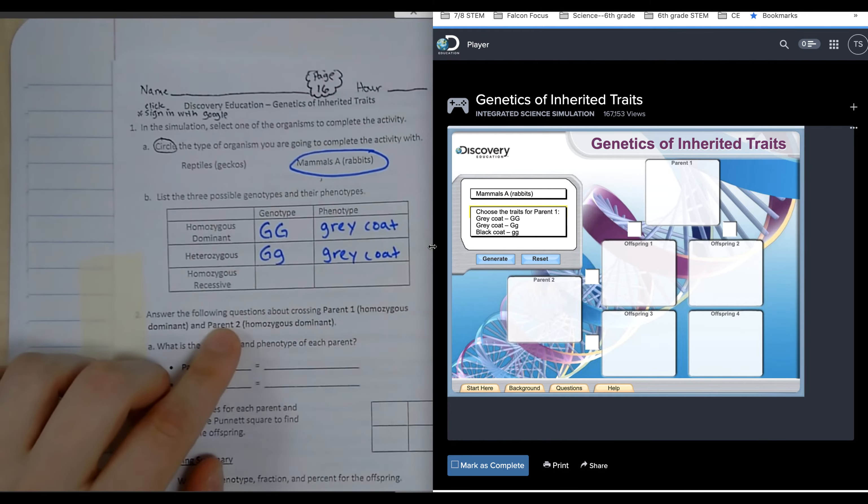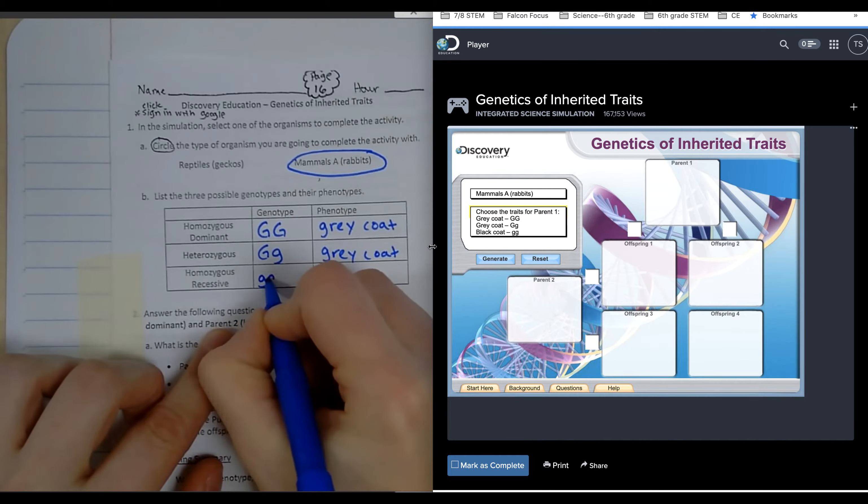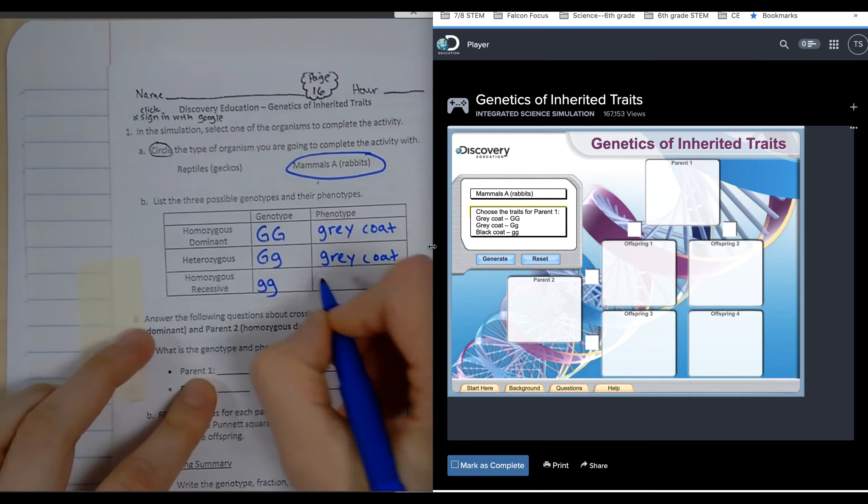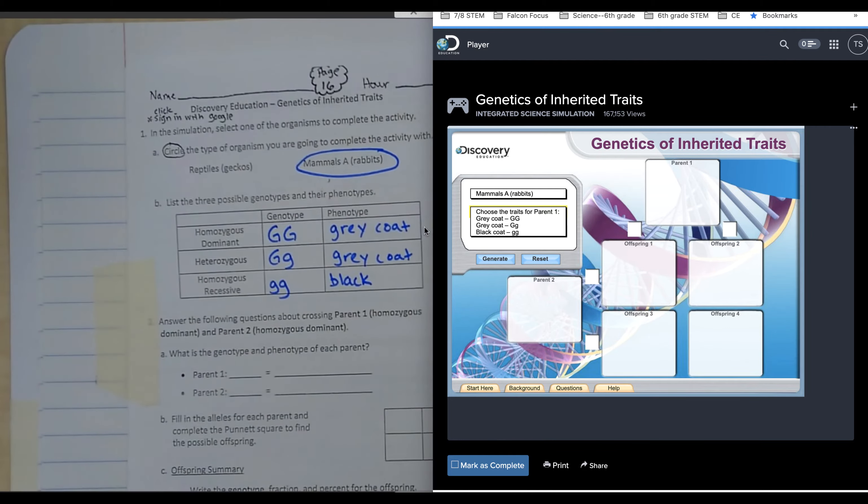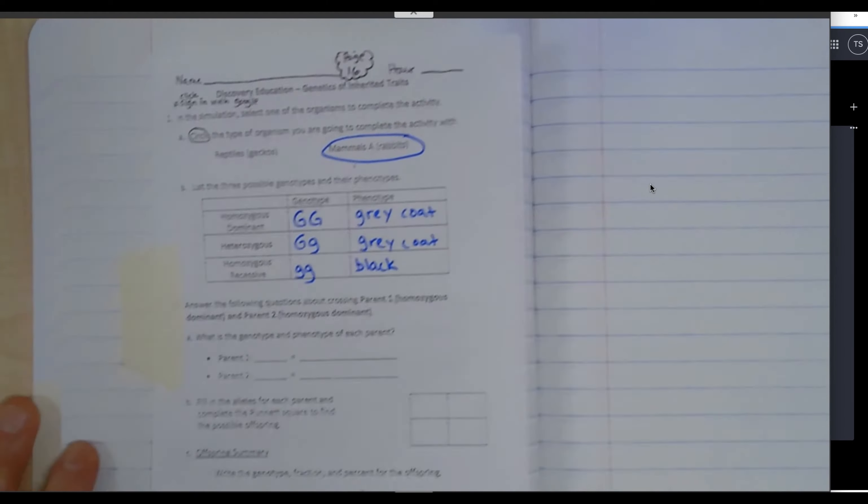Homozygous recessive, that's little g little g, is going to have a black coat. I don't need Discovery Ed for a little bit.